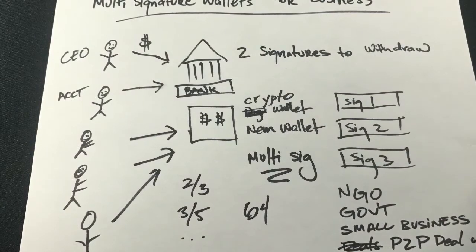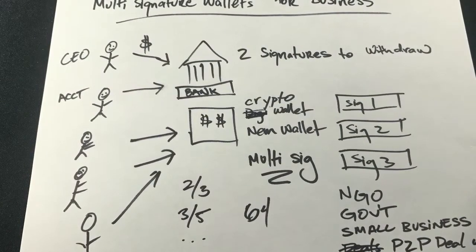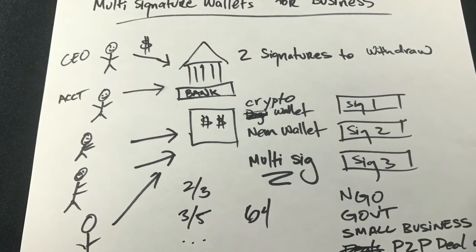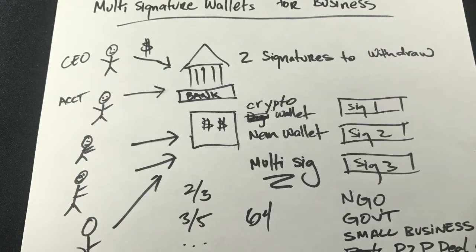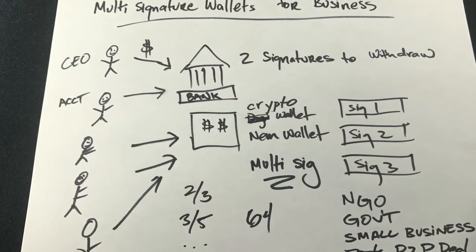So to recap, multi-signature wallets are an easy way to control who's withdrawing funds from your wallet and to make sure that you can be at least one of the co-signers to approve a withdrawal.